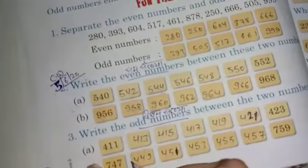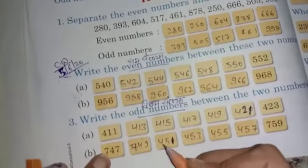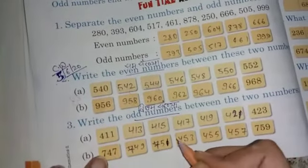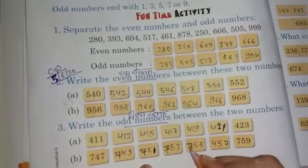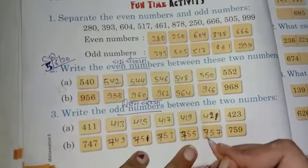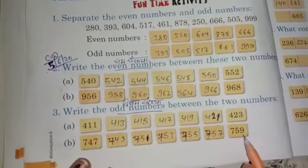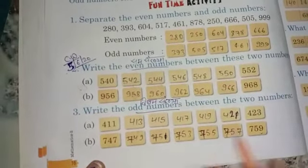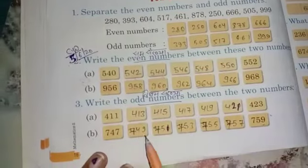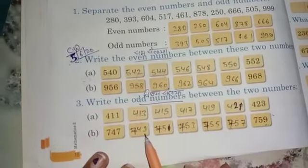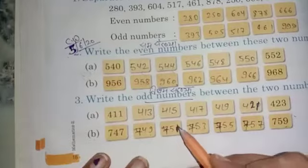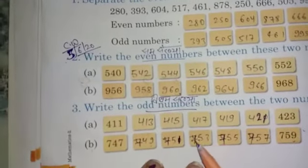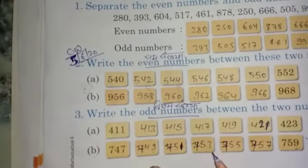Next is between 747 and 759, you have to write all the numbers. So after 747 comes 749, 751, 753, 755, 757, and after that comes 759. Between 747 and 759, I have told you the numbers: 749 - the 9 does not come in 2 times table, 751 - the 1 also does not come in 2 times table, 753 - the 3 also does not come in 2 times table.